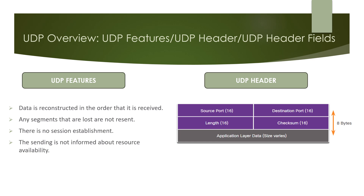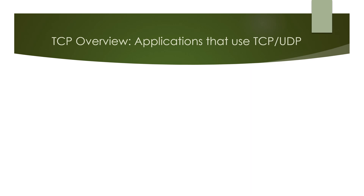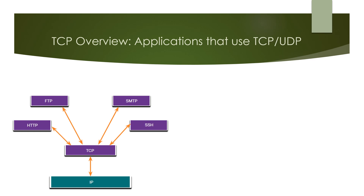As for the applications that use each protocol: for TCP, it is a good example of how the different layers of the TCP/IP protocol suite have specific roles. TCP handles all tasks associated with dividing the data stream into segments, providing reliability, controlling data flow, and reordering segments. TCP frees the application from having to manage any of these tasks. Applications can simply send the data stream to the transport layer and use the services of TCP.